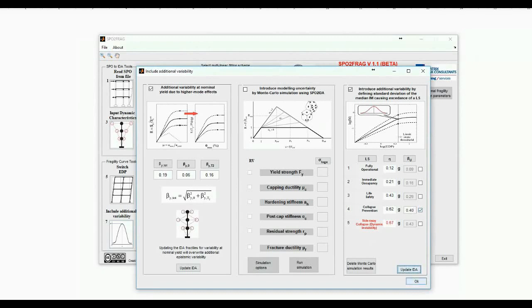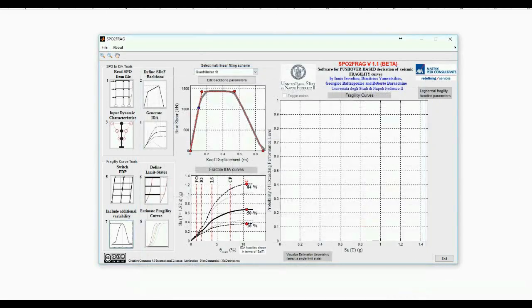On the rightmost panel, we shall add some variability due to model uncertainty by setting βU at 0.4 at the collapse prevention limit state. These modifications cause the upper and lower IDA fractiles to move further apart.